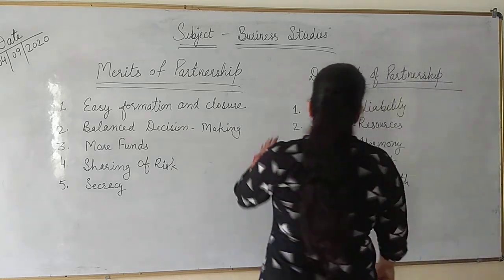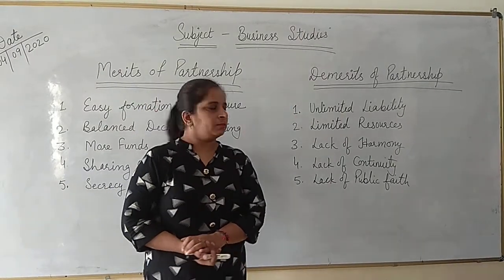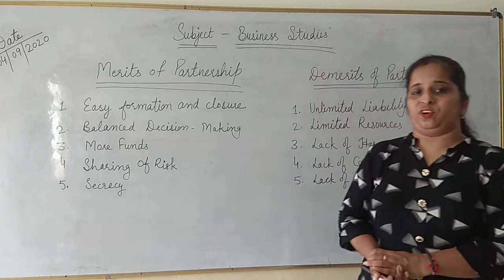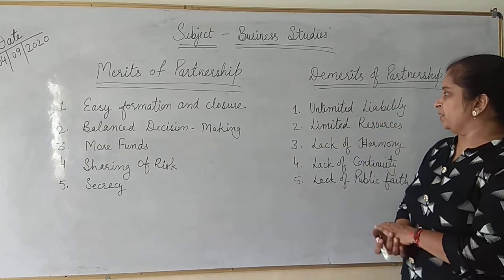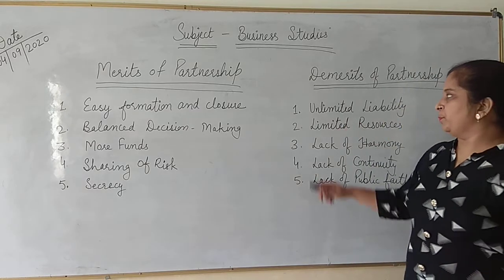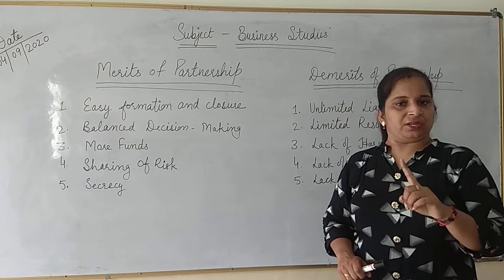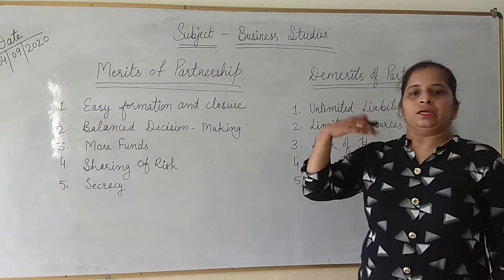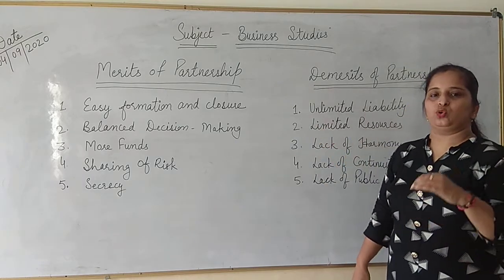Next are the demerits of partnership. The first demerit is unlimited liability. Partners' liability is unlimited. When the partnership firm is dissolved, after paying from the firm's assets, if liabilities remain, it can also be paid from partners' personal assets. This is the limitation of unlimited liability.